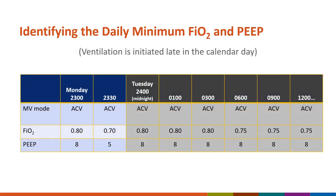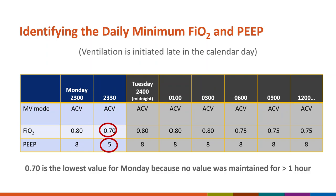Let's look at an example where there may not be a time frame in which any value has been maintained for more than one hour — such as when a patient is intubated late in the calendar day. The daily minimum FIO2 would be 0.70 and the daily minimum PEEP would be 5. In the event that there is not a value maintained for greater than one hour, you will simply choose the lowest value documented on that calendar day.